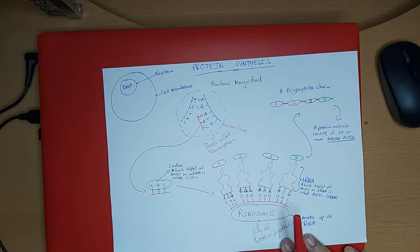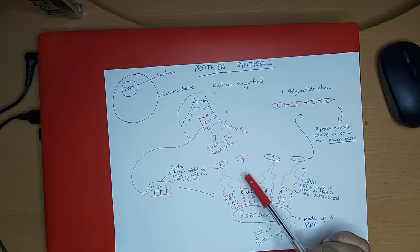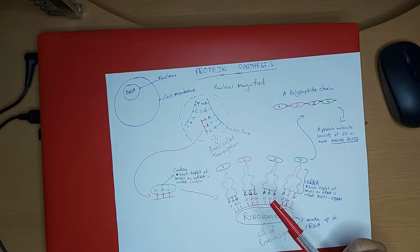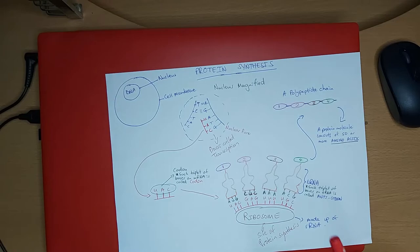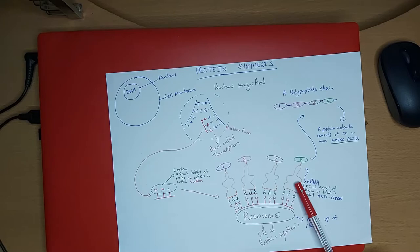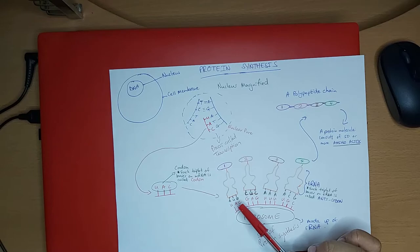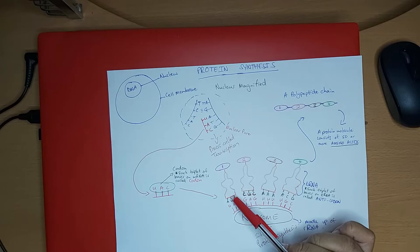Then we have a tRNA molecule. These structures drawn in orange — one, two, three, four — these are the tRNA. The fifth step is: tRNA with an amino acid. Each of the four tRNA molecules carries an amino acid. Amino acids are the building blocks of proteins. On the opposite end of the tRNA we have triplet bases called anticodons, and they are complementary to the codon.